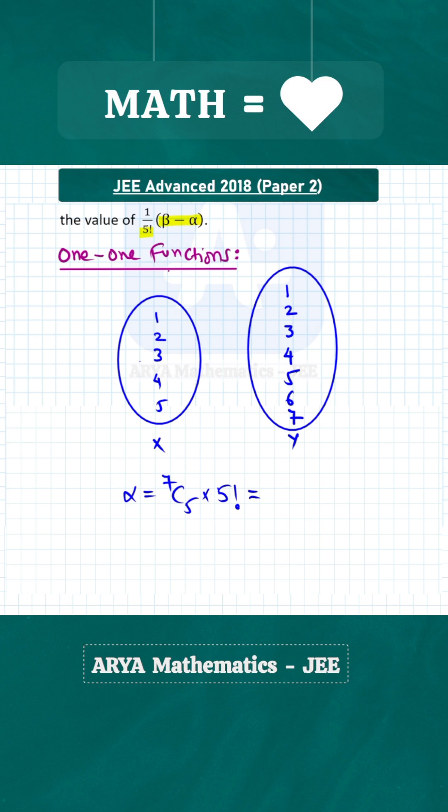Now we need (β - α) by 5 factorial, so we will write α and β in terms of 5 factorial only. Now 7C5 is 21, so α will be 21 × 5 factorial.